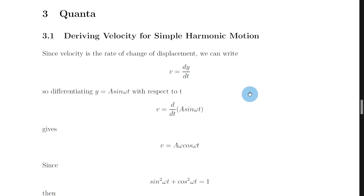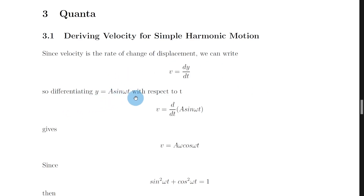We've got two equations for the displacement of an object undergoing SHM on the relationship sheet: y equals a sine omega t, or y equals a cos omega t. It depends on where the object is starting from as to which one we use. Here we're going to assume that our object starts from zero displacement, i.e. when y equals zero, so we're going to start off with the sine expression y equals a sine omega t.